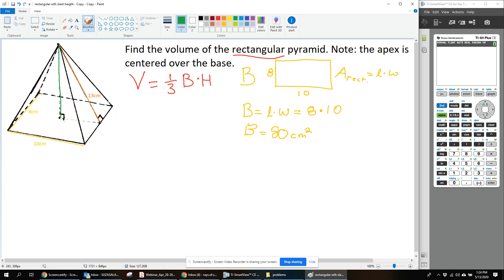This distance here, because it's centered, is going to be half of this side of the base. So if this was 10, half of 10 gives me 5.